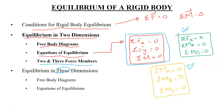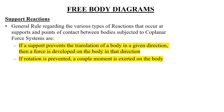A student asked for clarification: points A, B, and C — are those points on the object? The instructor confirmed that yes, basically those are three points on that rigid body.